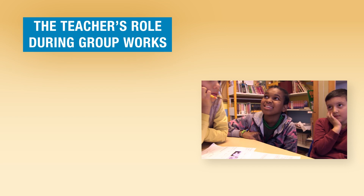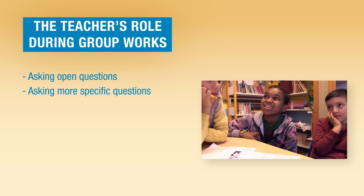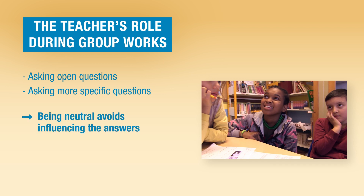Here, we see an interaction between the teacher and a group of students which takes place in two stages. The teacher first asks an open question: what are you going to do in the meantime? Then, a second, more precise question linked to the answer given by the students: what are you going to measure? This way of proceeding allows the teacher to take information on the ways the students organize and understand the work in progress without directing their answers.